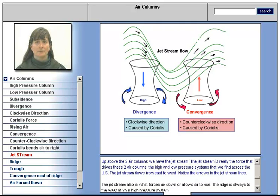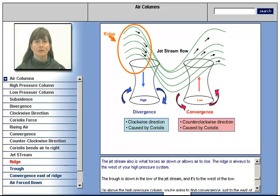Up above the two air columns, we have the jet stream. The jet stream is really the force that drives these two air columns, the high and low pressure systems that we find across the U.S. The jet stream flows from east to west. Notice the arrows in the jet stream lines. The jet stream also is what forces air down, or allows air to rise.